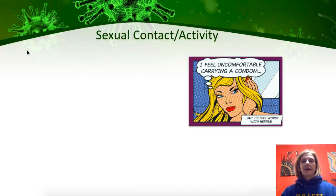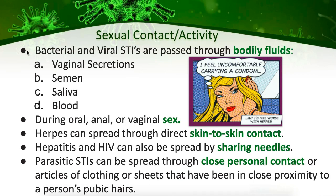As the name implies, sexually transmitted infections are contracted through sexual contact or sexual activity. Bacterial and viral STIs are passed through bodily fluids — that might be vaginal secretions, semen, saliva, or blood. A lot of people think you can only get STIs through vaginal sex, but they can also be transmitted through oral and anal sex. Oral sex is a myth that a lot of students have — they think it's a safer form of sex. Herpes can spread from skin-to-skin contact, so you don't even need to pass fluids.